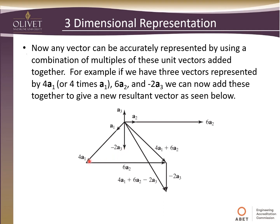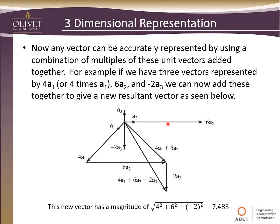So the resulting vector after we add those together is written as 4A1 plus 6A2 minus 2A3. We can determine the magnitude of this new vector by taking the magnitudes of the previous three components, squaring them, adding them together, and then taking the square root. So the magnitude of this new resultant vector is about 7.483.